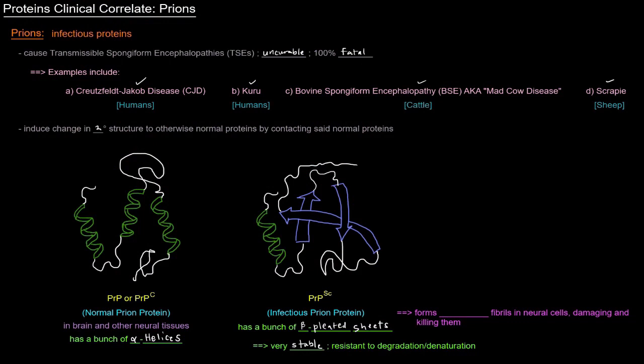And this protein, when it comes into contact with normal PRP, normal prion proteins, it turns those normal prion proteins into infectious prion proteins. And they go through and infect more normal prion proteins. And so it's just pretty much exponential once it's got a hold of normal prion proteins.